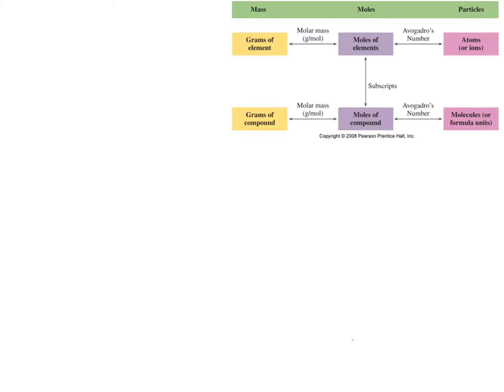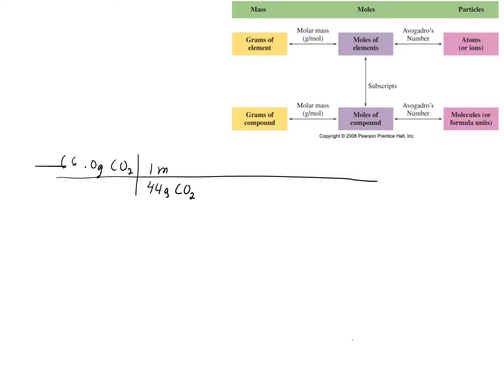We start with 66.0 grams of CO2 and work through our conversion factors, making sure units cancel. We use the molar mass of CO2 — one carbon and two oxygens added together from the periodic table. We'll use a tenth for molar mass here, though more decimal places would be better. Grams of CO2 goes on the bottom so units cancel, and it's always one mole of CO2 — that's our molar mass conversion factor. Units cancel, so let's keep going.